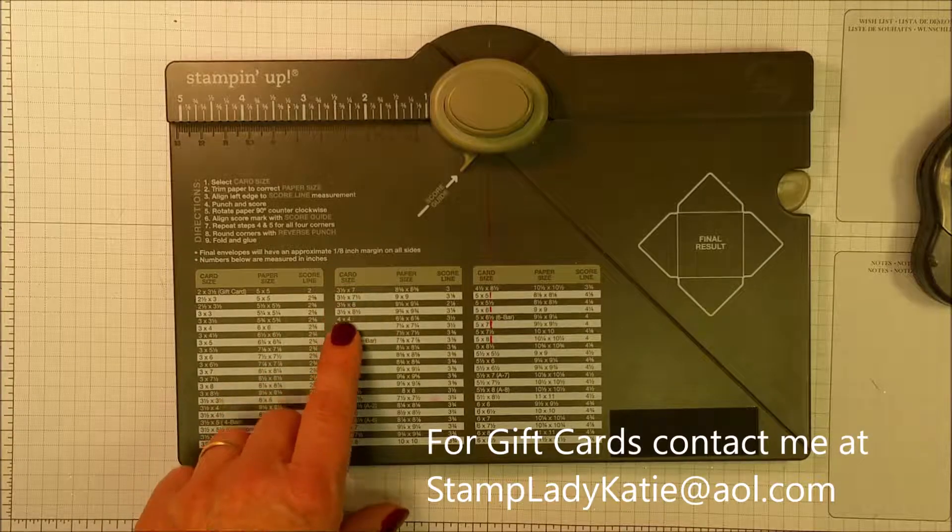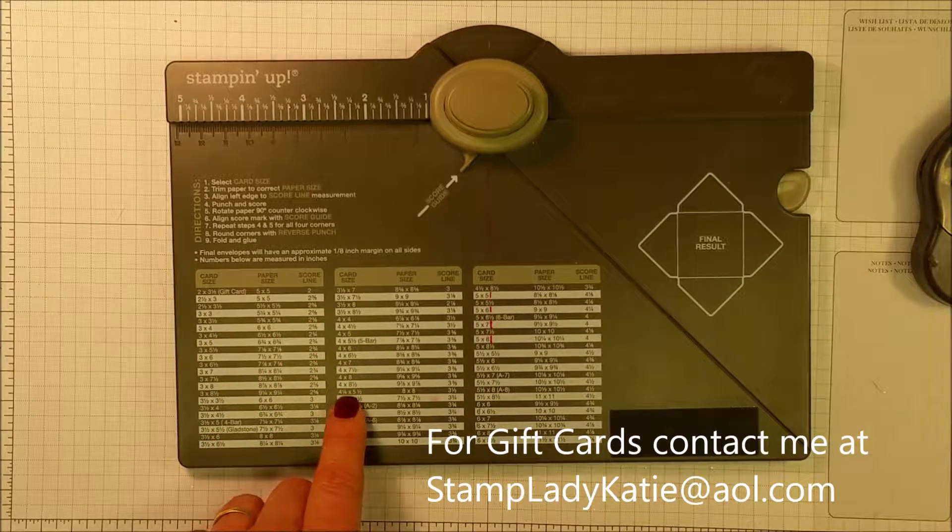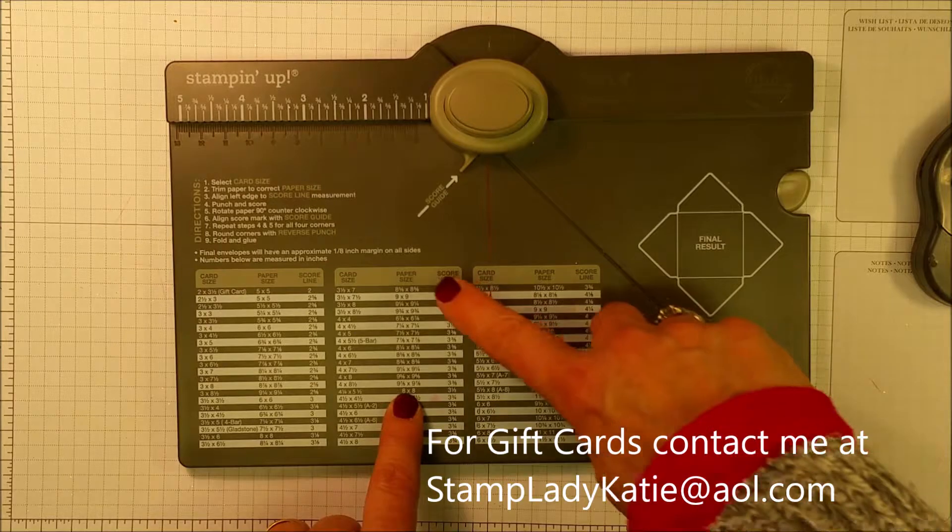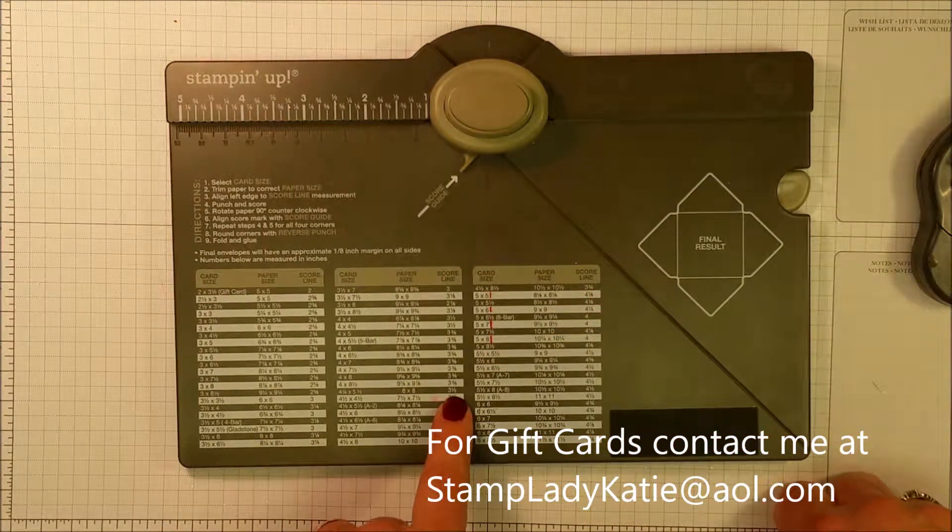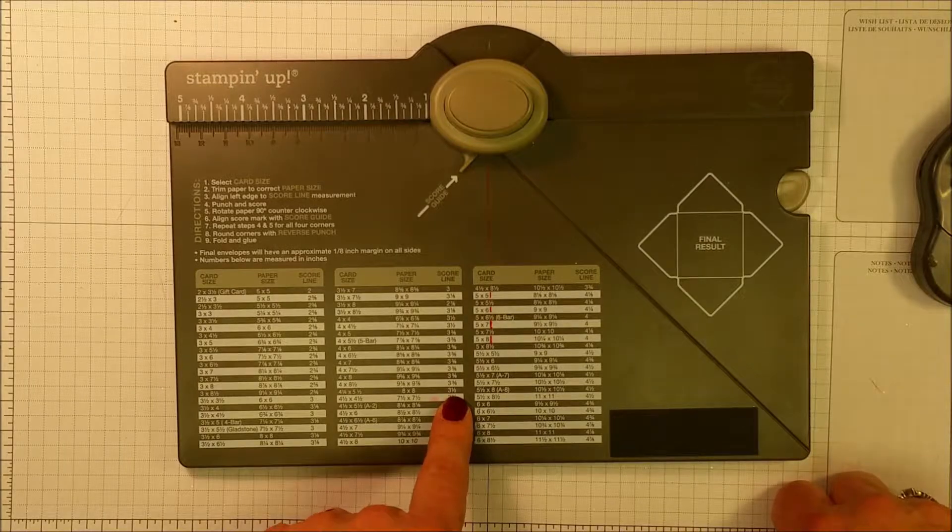So I go down my chart for card size, 4 1/4 by 5 1/2. The next column over tells me the size paper that I need to cut. And the next column over tells me the line that I begin for my score line.